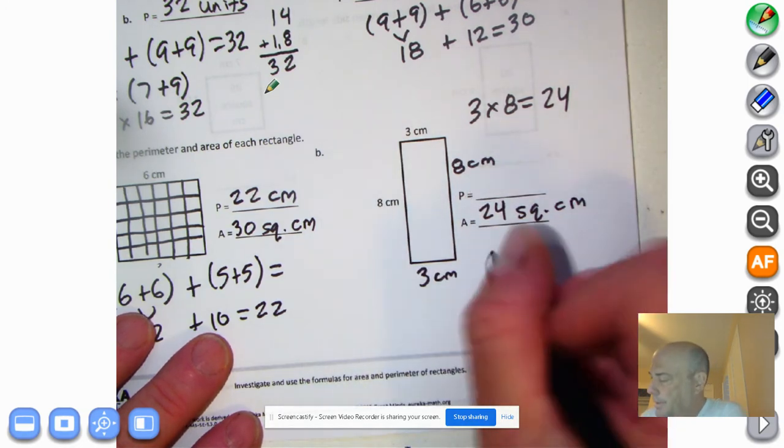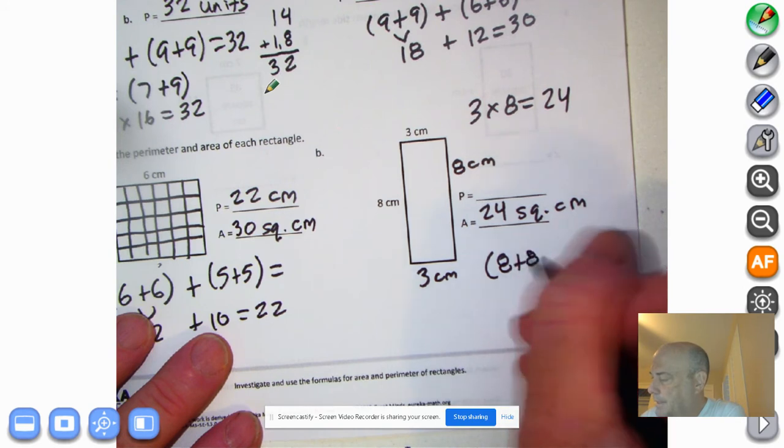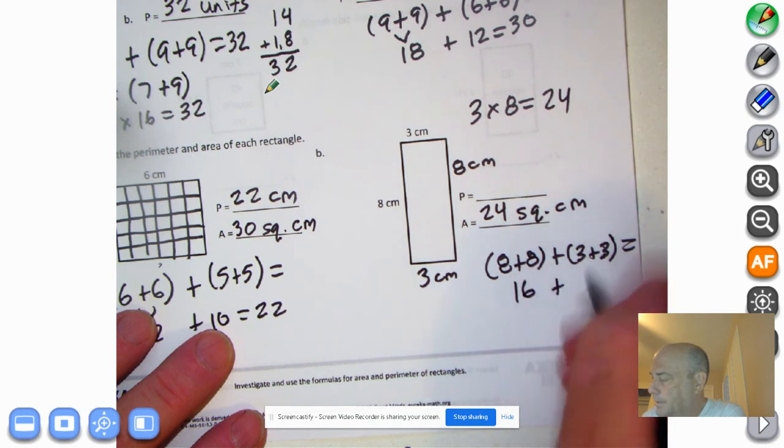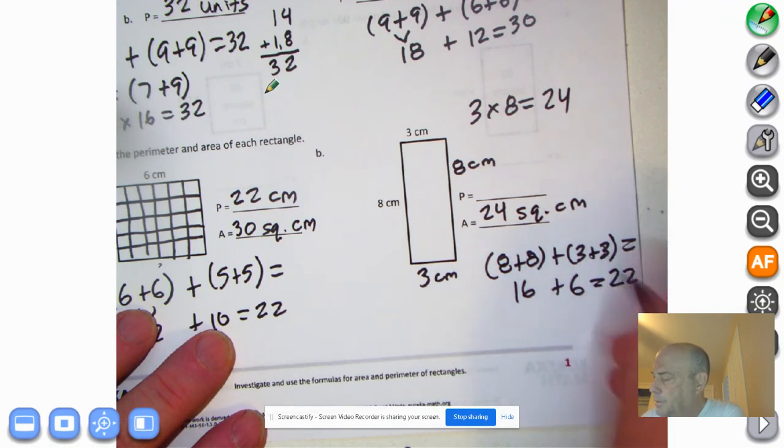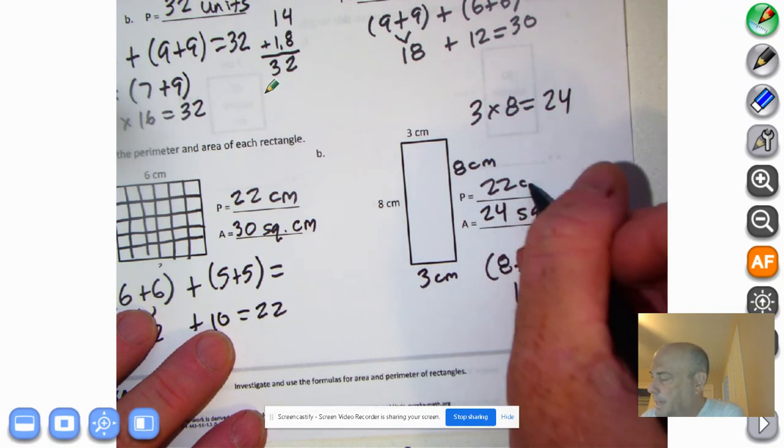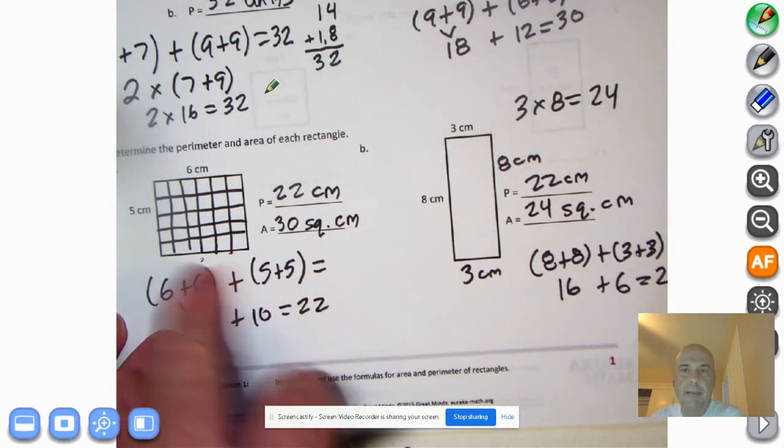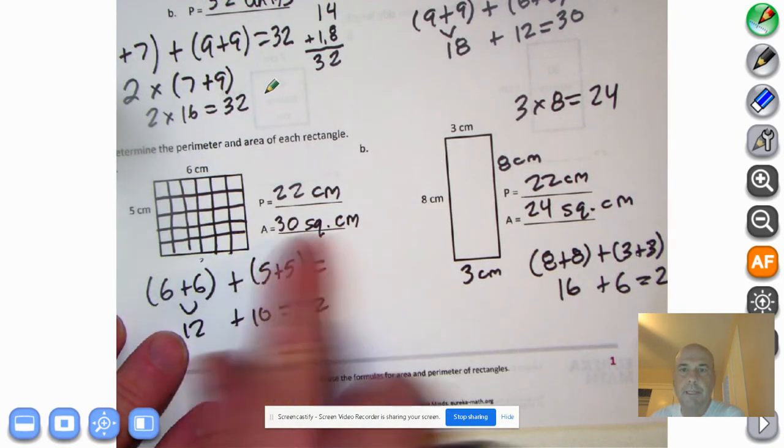So all I have to do is go eight plus eight plus three plus three. What's that going to equal? Eight plus eight is 16. Three plus three is six. And 16 plus six is 22. So we're going to put 22 centimeters. And look at that. The area, most of these rectangles are very different, but they have the same perimeter of 22 centimeters. Intriguing.